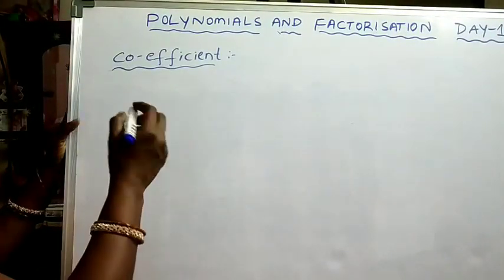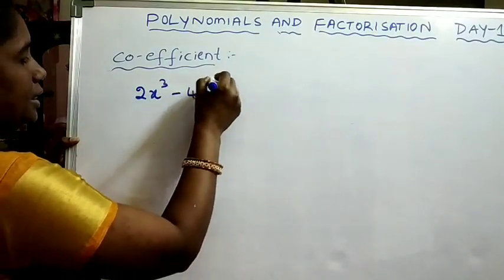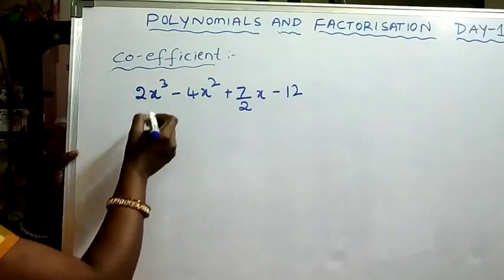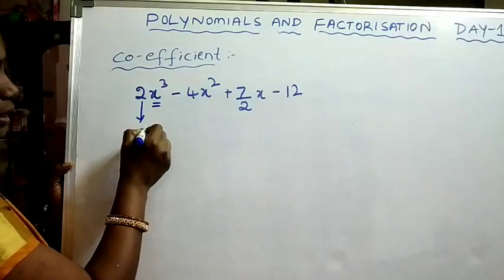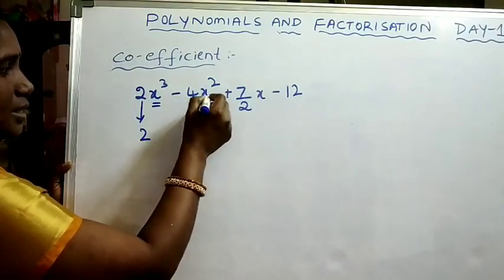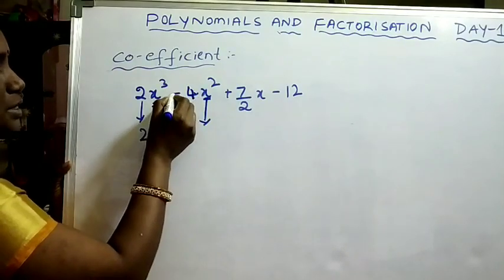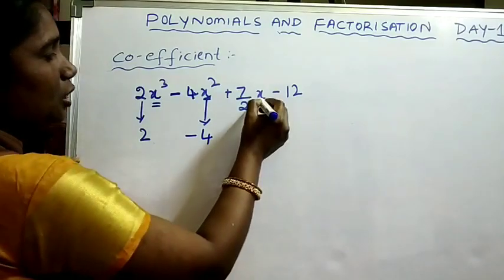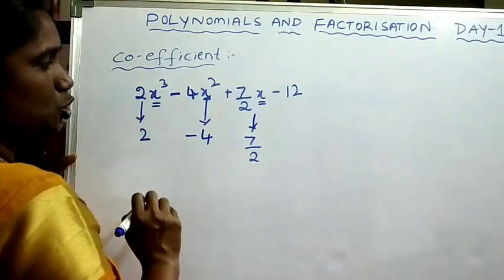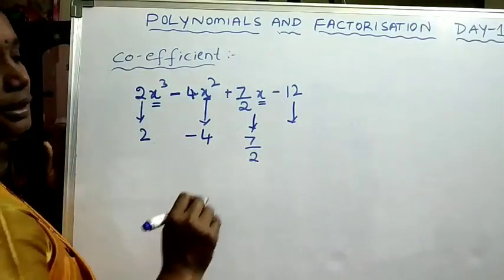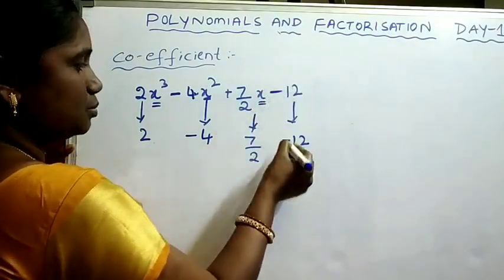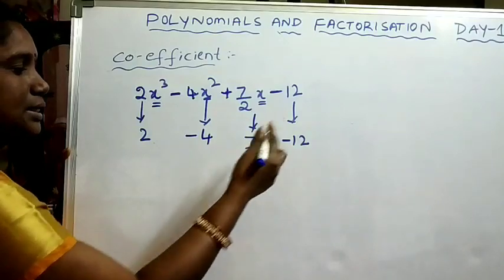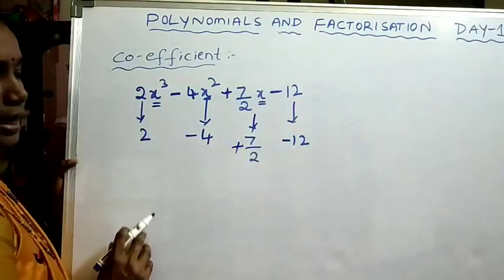Consider the polynomial 2x³ minus 4x² plus (7/2)x minus 12. The coefficient of x³ is 2. The coefficient of x² is minus 4 — you must state it along with the sign. The coefficient of x is 7/2. The constant term is minus 12, again with the sign. If a term has a minus sign, we must include it. If no sign is stated, it is positive by default.